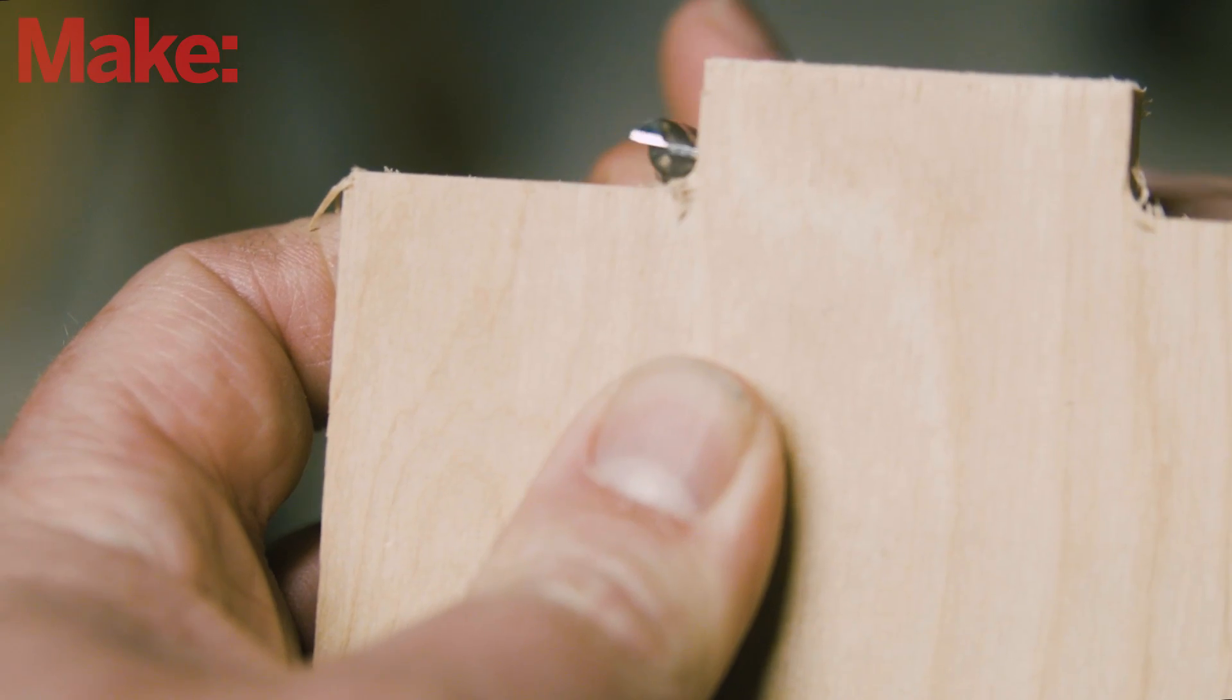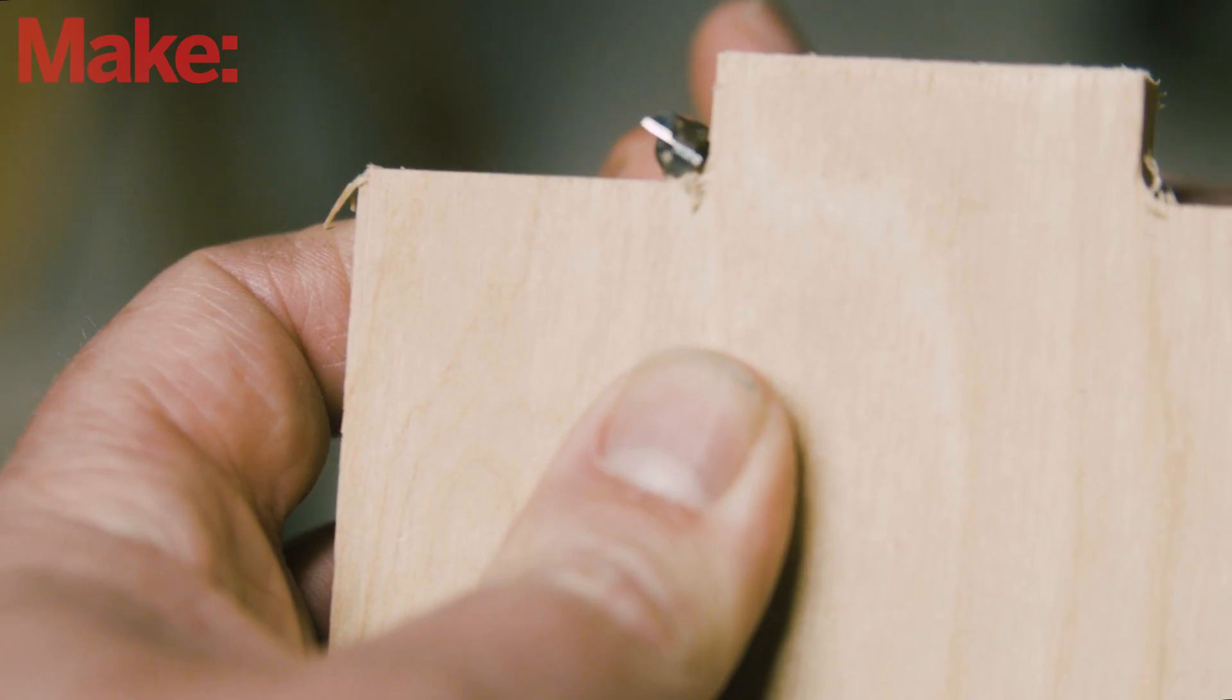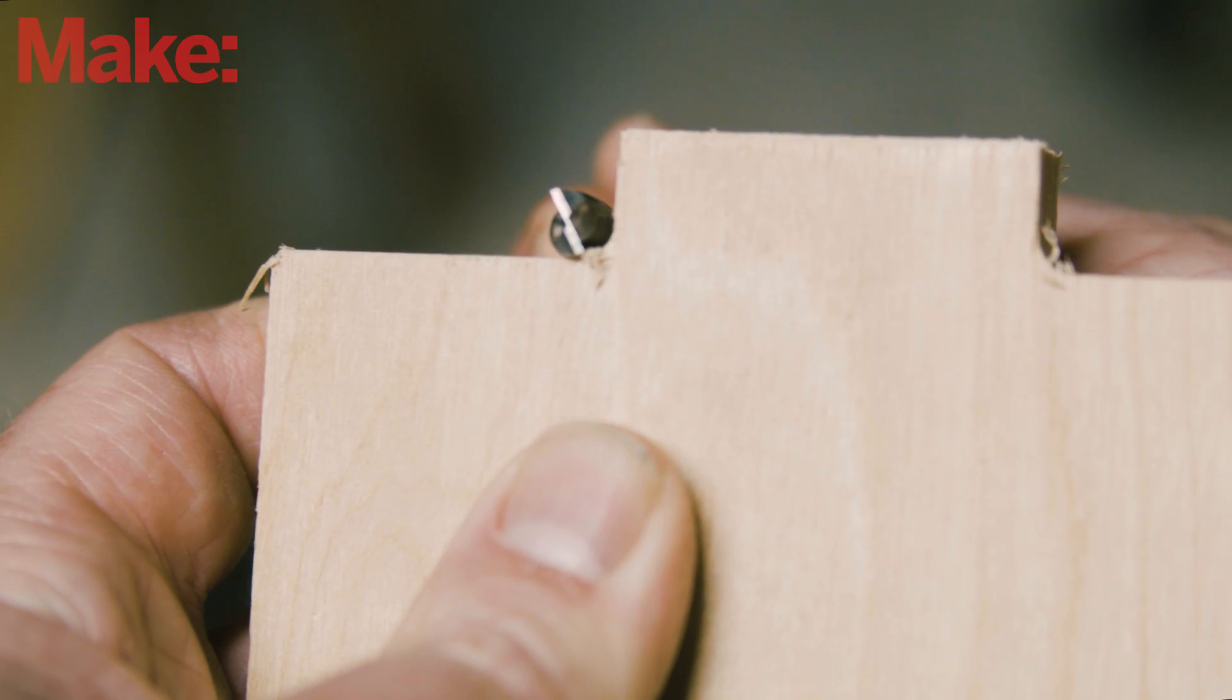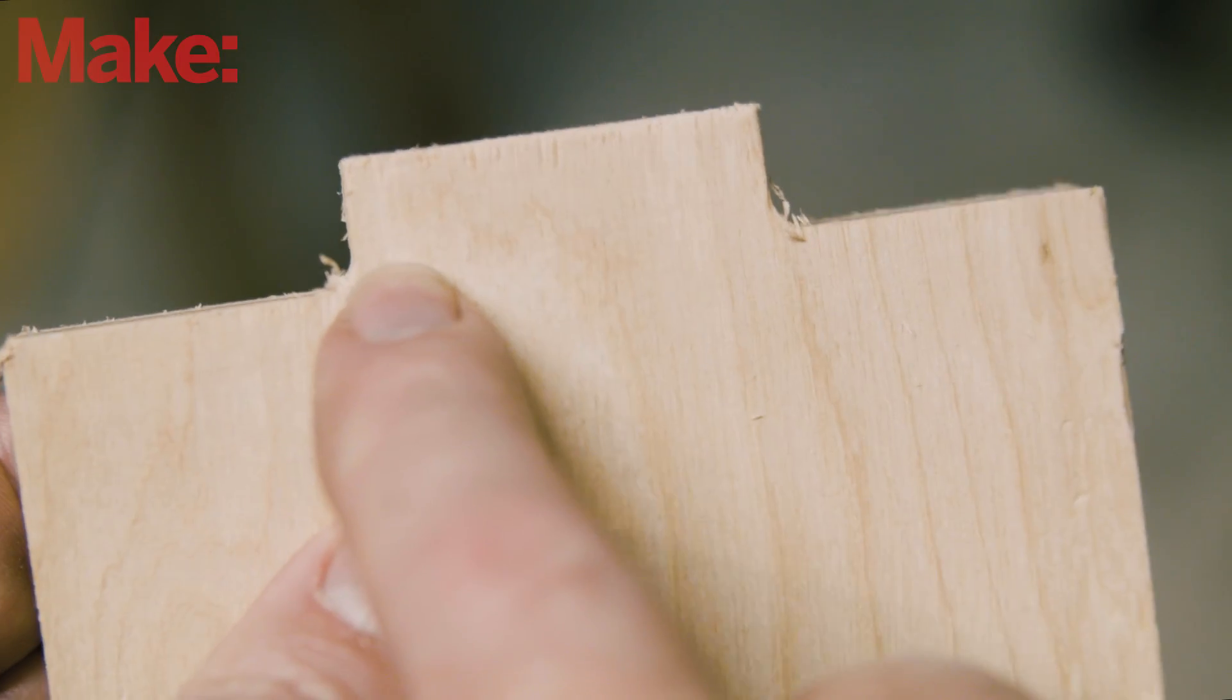That's just trying to fit a square peg to a rounded hole. You see, the problem comes from how a router cuts wood. It uses a round bit, which means it can only make inside corners as sharp as the radius of the bit.